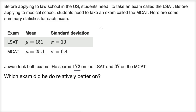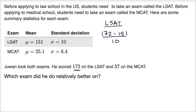On the LSAT, he scored 172. So how many standard deviations is that? We take 172 — his score — minus the mean. This gives the absolute number he scored above the mean. Then we divide by the standard deviation. So this is 21 divided by 10, which is 2.1 standard deviations above the mean.